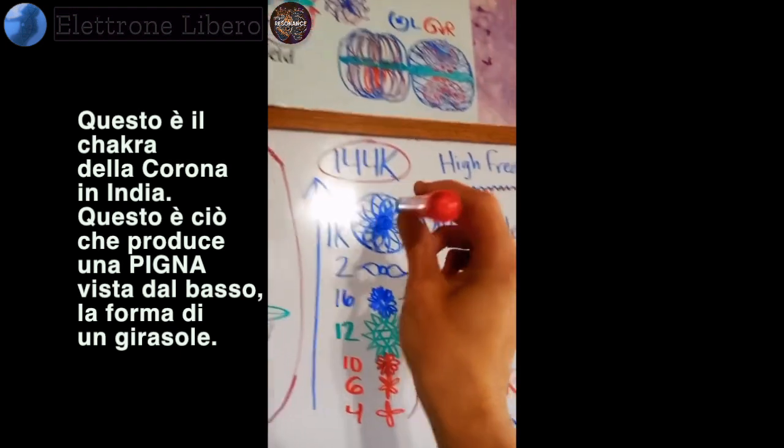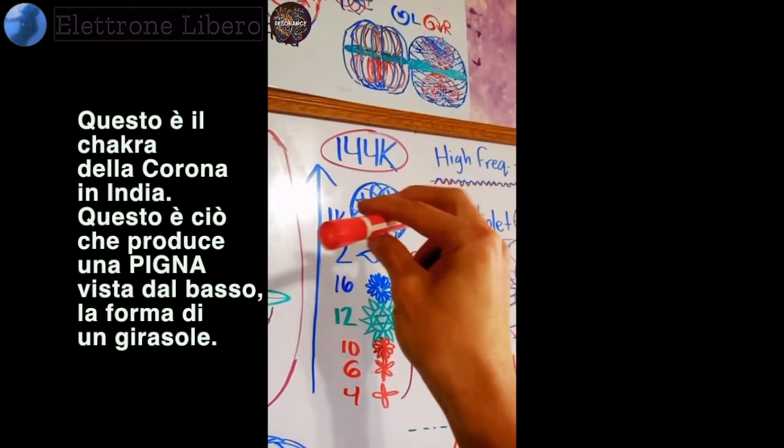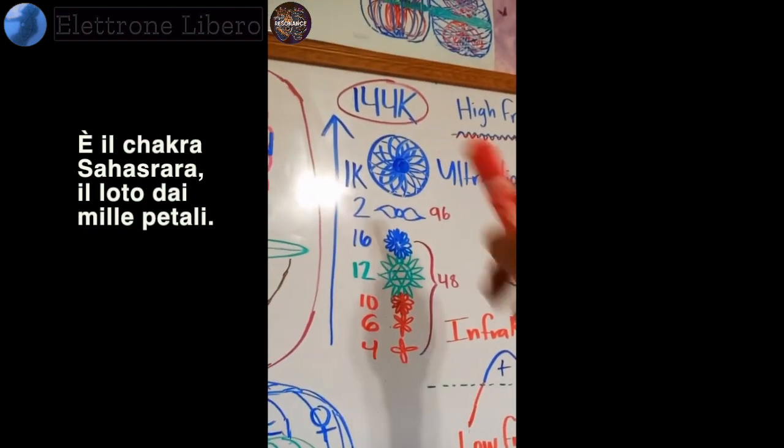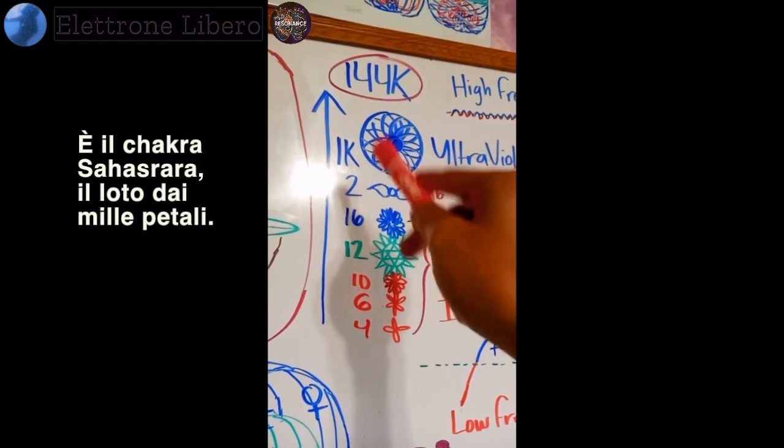And that's the crown chakra in India. This is what produces the bottom of a pine cone, the face of a sunflower. It's the Sahasrara crown chakra, the thousand-petal lotus.